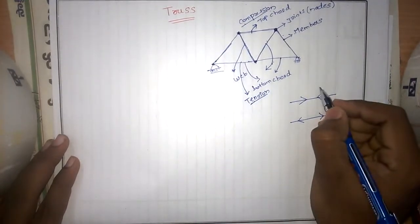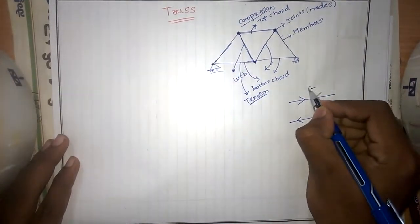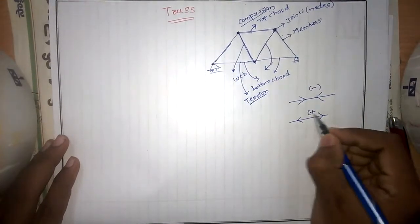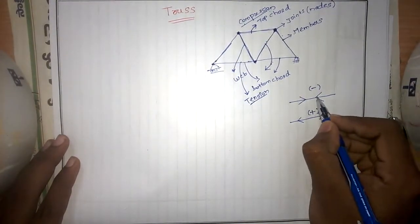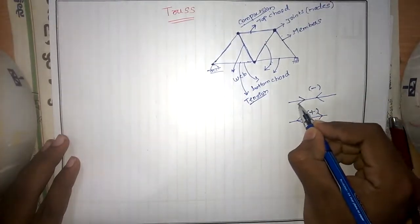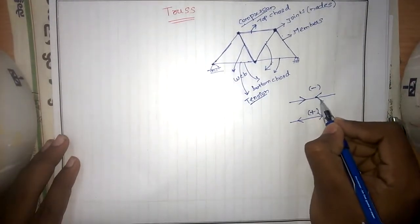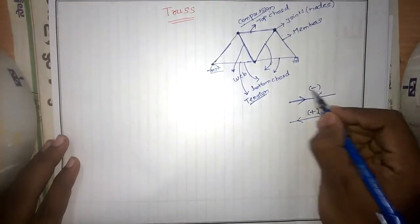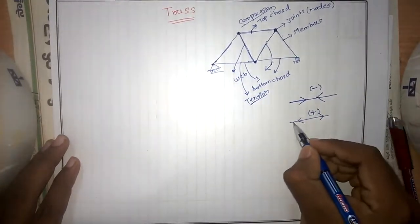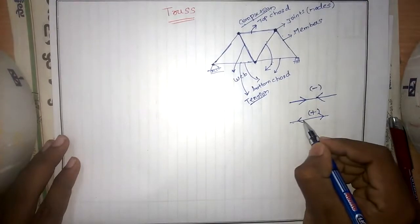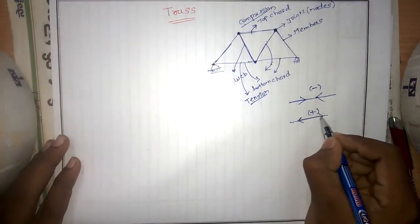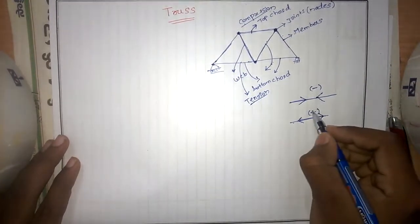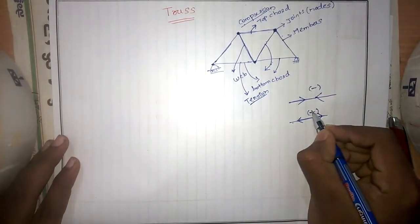Compression is generally indicated by a negative sign, and tension is indicated by a positive sign. Forces acting towards the member decrease the size of the member. Tension in the member means elongating the member — the length of the member may increase — therefore indicated by a positive sign.